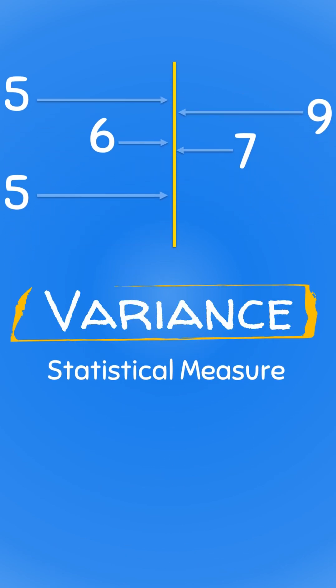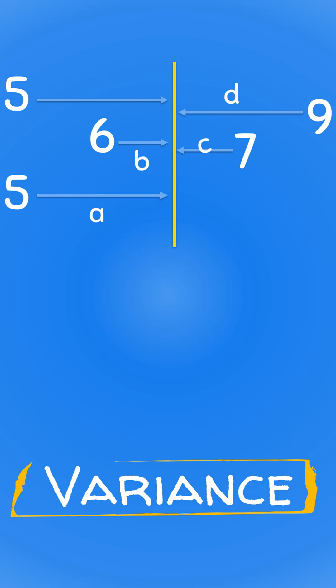The variance is a statistical measure that tells us how far all the numbers in the data set are from the average value of the data set.